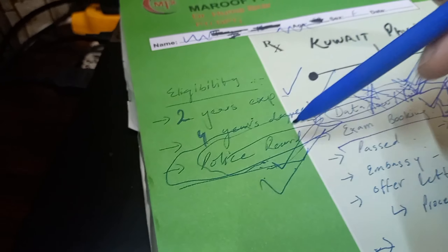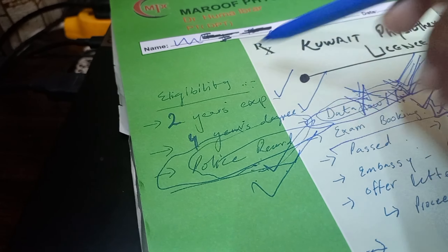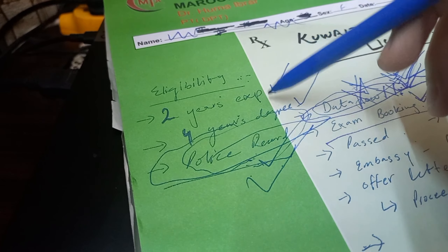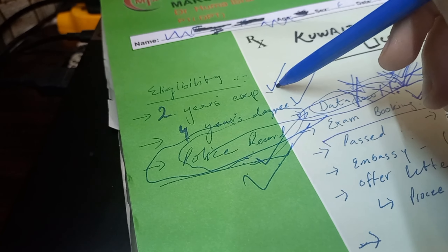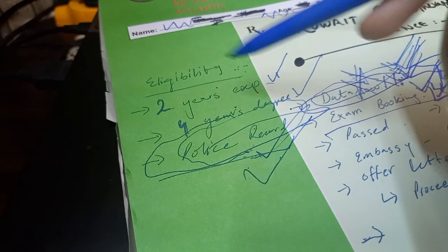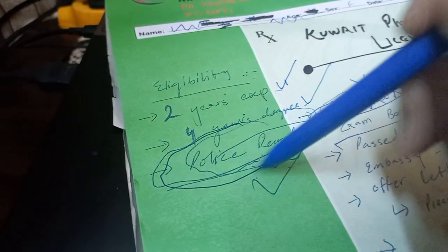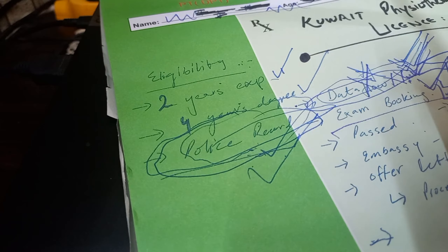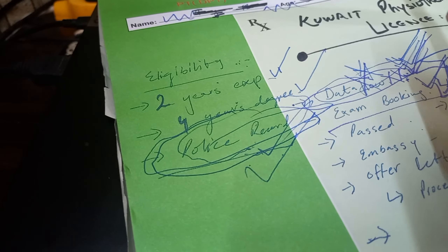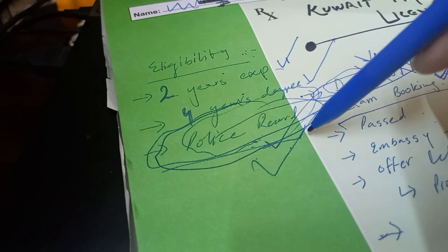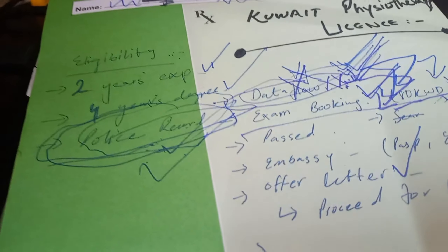Let's talk about the eligibility criteria for the Kuwait physiotherapy license. Two years of experience is required, and a four-year degree is required. Additionally, a police verification record is a mandatory requirement for a job visa or any visa for Kuwait.